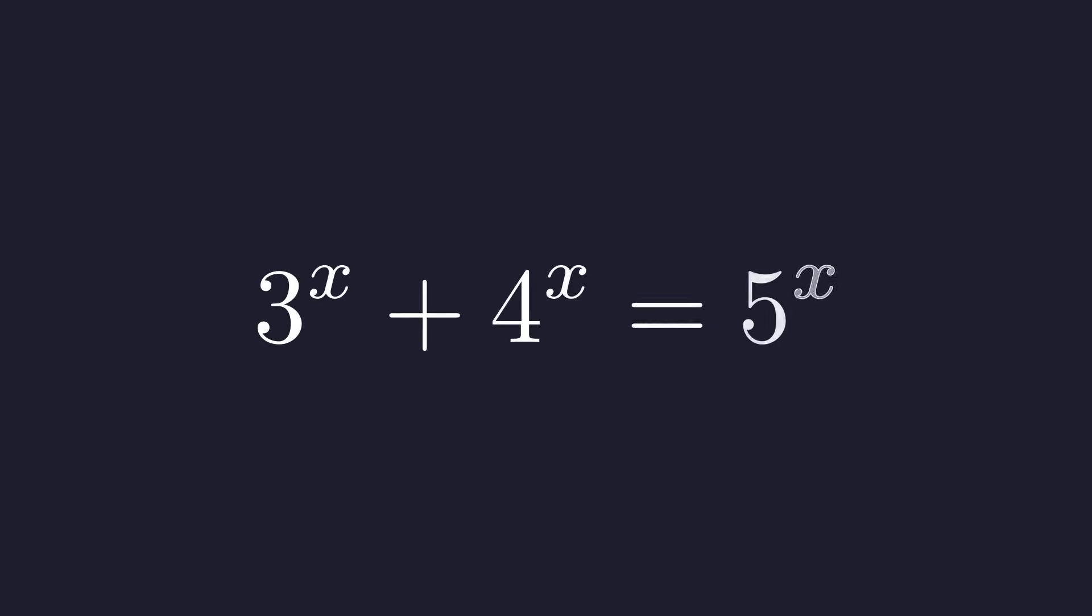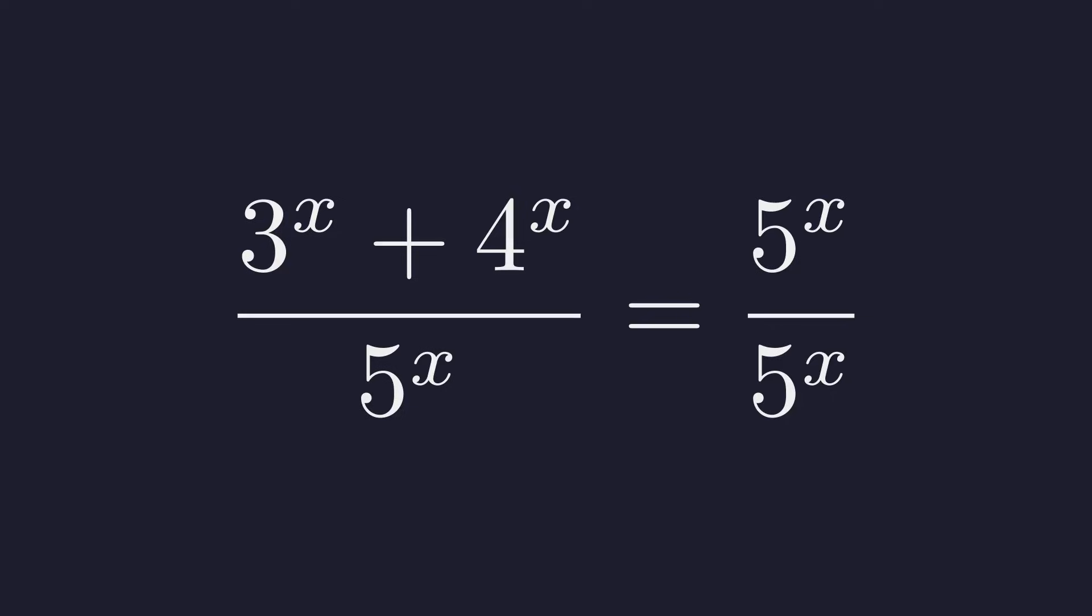Let's return to our original equation. To analyze this, it helps to make one side of the equation a constant. We can do this by dividing everything by 5 to the x. This gives us the quantity 3 to the x plus 4 to the x all over 5 to the x equals 5 to the x over 5 to the x.